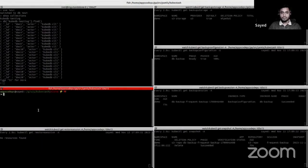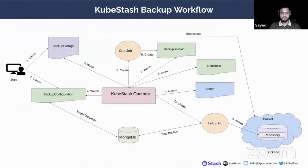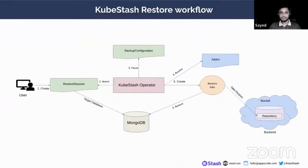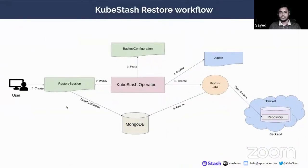Now let's move on to the restore section. In the restore flow, when the user creates a restore session, the KubeStash operator watches it, pauses the backup configuration, then resolves the add-on restore task. With this add-on restore task, the KubeStash operator creates a restore job to finish the restore process into the MongoDB database.